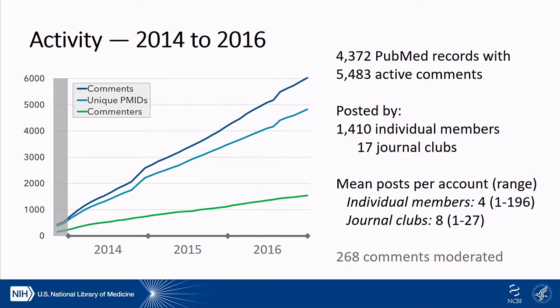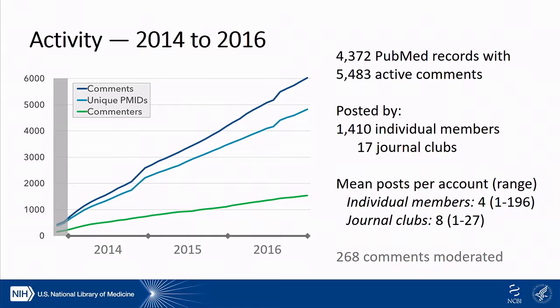On this slide, the left-hand side graph shows the accumulation of comments, publications with comments, and unique accounts posting comments since the inception of PubMed Commons. The data summarized on the right is limited to January 2014 to December 2016. Over that three-year period we have about 4,400 publications with about 5,500 comments. There's a big difference in commenting activity across accounts — about 60% of individual accounts comment once and only once, whereas for journal clubs it's less than 20% that comment only once. In addition, 268 comments were removed by moderators, and a similar number were deleted by users themselves.